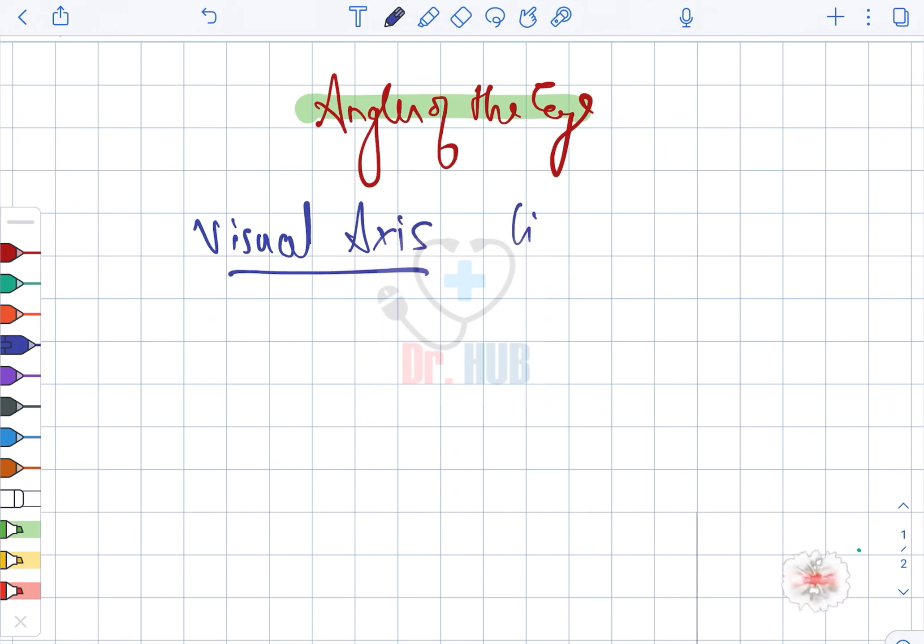There is a table: visual axis, line of sight, next comes the fixation axis.